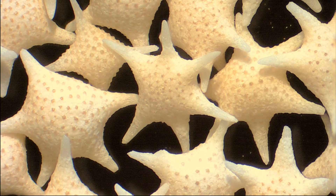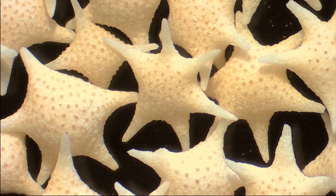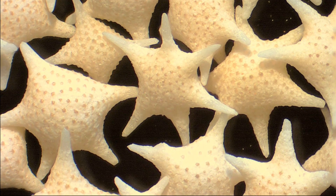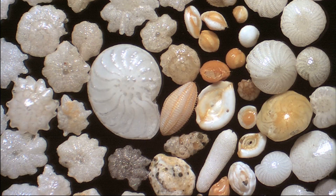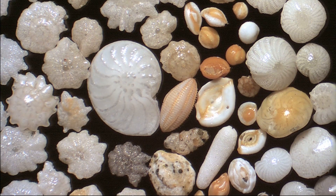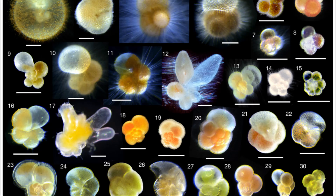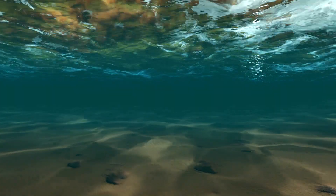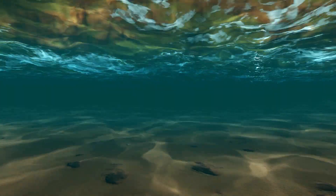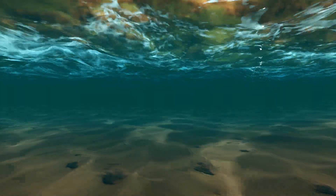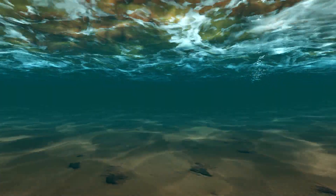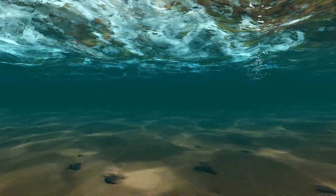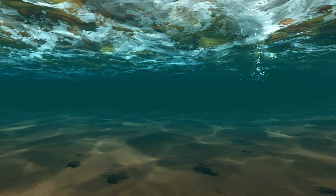Forams are primarily found in marine habitats and they are very important in marine food webs. Thousands of species have been identified. Some species are planktonic, meaning that they float in the water column, while the remainder live on or in the sand, mud, rocks, and plants at the bottom of the ocean.